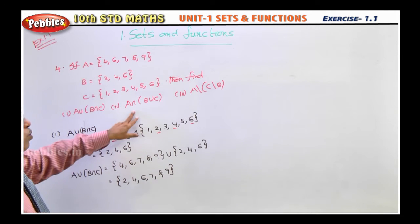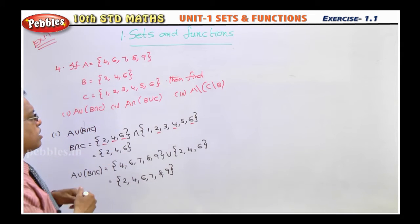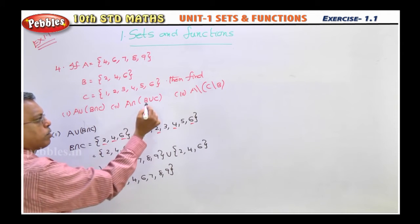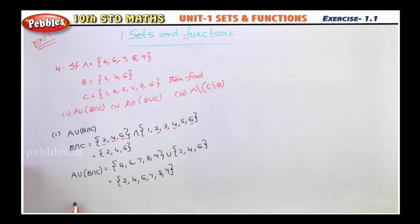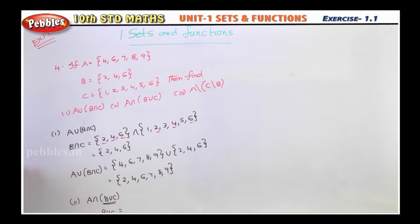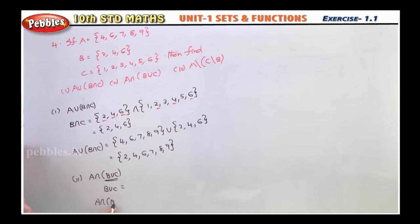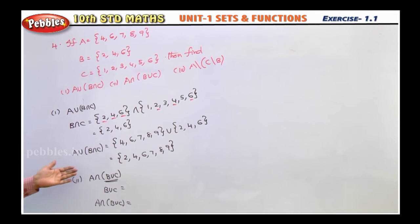Similarly, you try yourself this one. Third one I will tell. Because second one, first you have to find B union C. Now I will tell the steps here for second one. A intersection B union C. So whatever present inside the bracket, that only you should find first. So B union C first you find. Then A intersection B union C. That means for this answer, you find intersection in both the sets. That is very easy. You can try yourself.